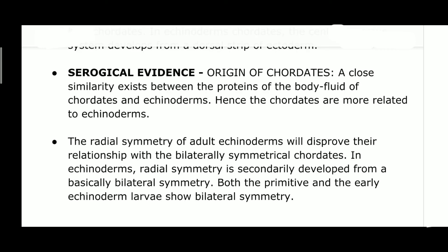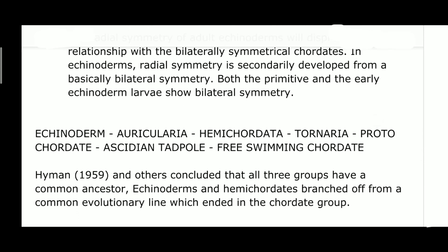Regarding serological evidence, both chordates and echinoderms have similar characteristics in their protein types and body fluids. The radial symmetry of adult echinoderms is considered to be secondarily developed from a basically bilateral symmetry, as both primitive and early echinoderm larvae show bilateral symmetry. Major evidence shows that Hemichordata is the common ancestor linking hemichordates and echinoderms.